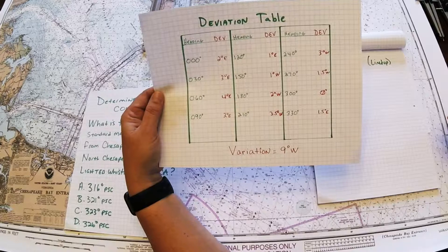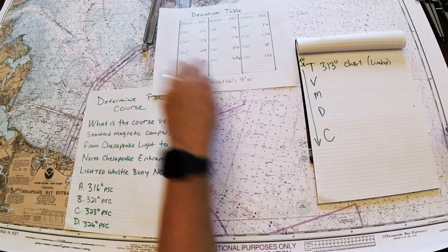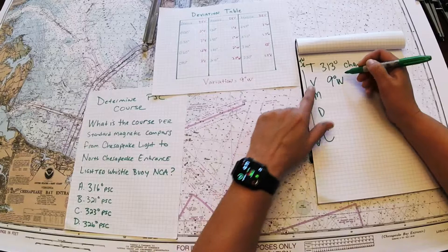If you're doing something out of our student workbook, you would need to look and see what the variation is given and then use that. So for this problem here, I'm going to go ahead and use 9 west. 9 degrees west is our variation. We're going to use a calculator so that we don't make any mistakes.